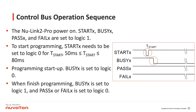Let's talk about how the Control Bus works. The Start, Busy, Pass, and Fail signals are all set to logic 1 when NewLink 2 Pro is powered on. To start the programming, the Start signal needs to be set to logic 0 for a time slide between 15ms to 80ms. Then, the programming starts.